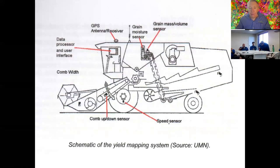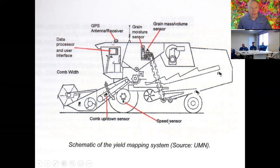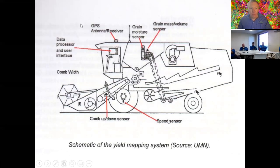Going back to the basics of yield monitoring: once you understand how these things work — it's a bit like a GPS system — you can diagnose any problems pretty quickly. You might not be able to fix them if you're not the manufacturer, but at least you've got an idea of what might be causing errors. One of the most important components is the GPS receiver, so you know where you are in the paddock. Many headers have yield monitors but not the ability to do yield mapping — they monitor yield but don't record it spatially. GPS is absolutely critical for producing a yield map.